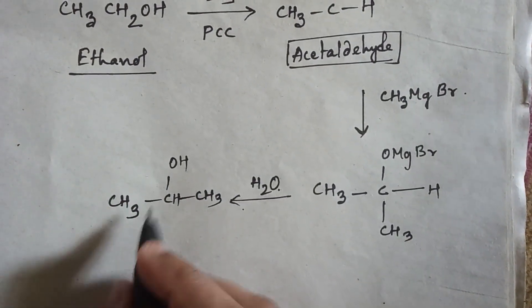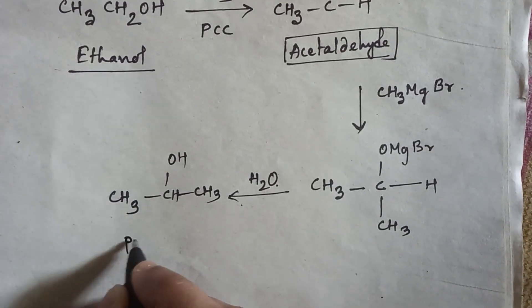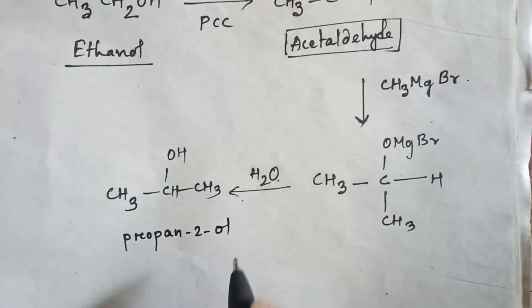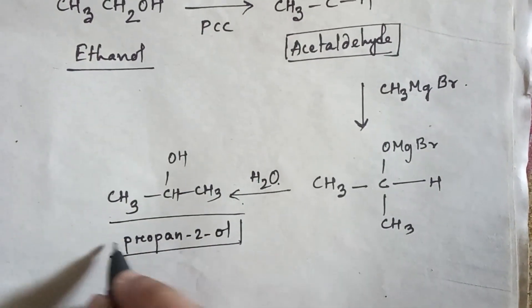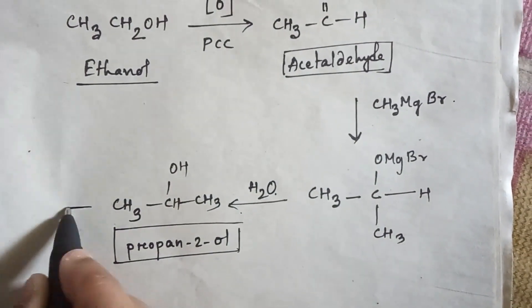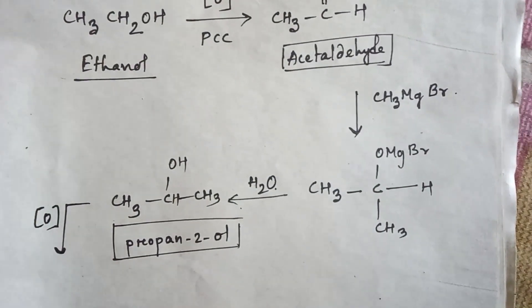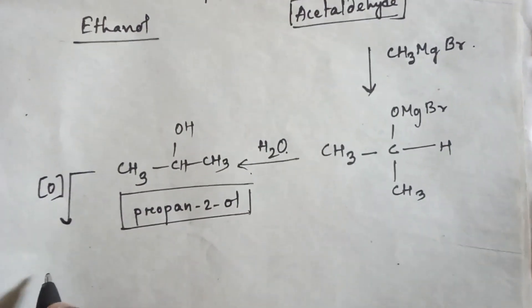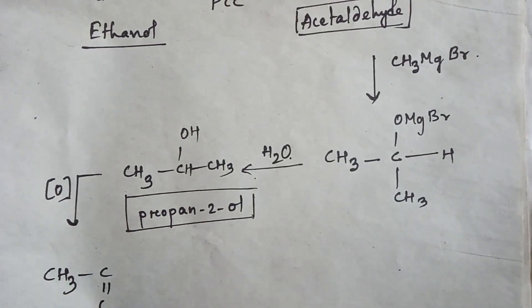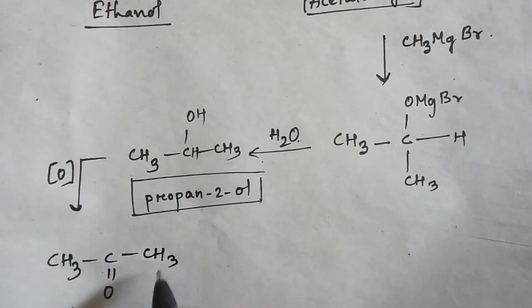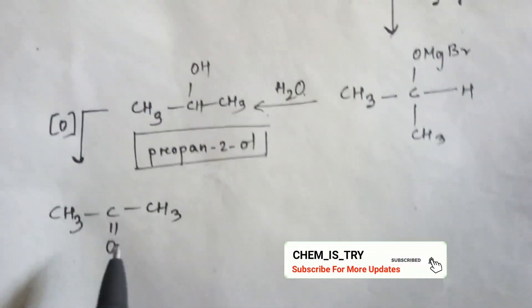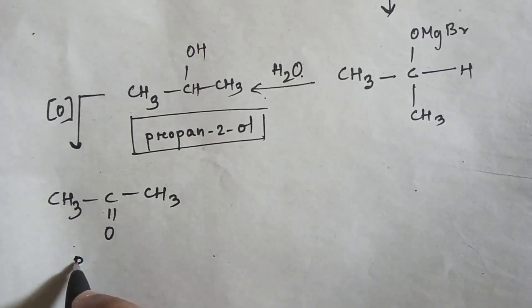So this is propan-2-ol. Now in this 2° alcohol if you do oxidation then you will get a ketone. Here you can see this is propanone or acetone.